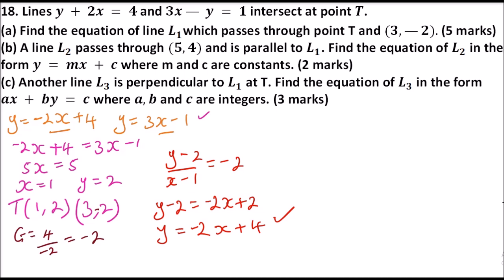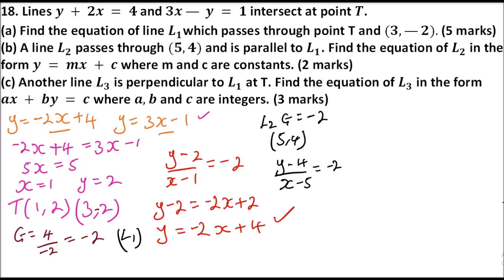For part b, a line L2 passes through (5, 4) and is parallel to L1. Since L2 is parallel to L1, the gradient of L2 equals the gradient of L1, which is negative 2. Using the point (5, 4), we set up the equation: y minus 4 over x minus 5 equals negative 2.